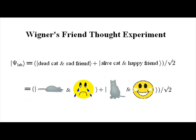So now his friend is in a quantum superposition of being sad after opening the box and finding a dead cat, and being happy after opening the box and finding a live cat. But the thing is, from Wigner's perspective, his friend is in a quantum superposition of being both happy and sad from seeing a dead or alive cat at the same time.